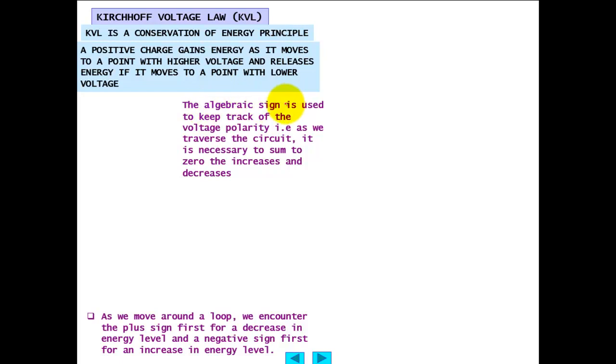So algebraic sign is used to keep track of the voltage polarity as we traverse the circuit. It is necessary to sum to zero the increases and decreases. This means that energy is increased or decreased, and the polarity is the voltage or energy.